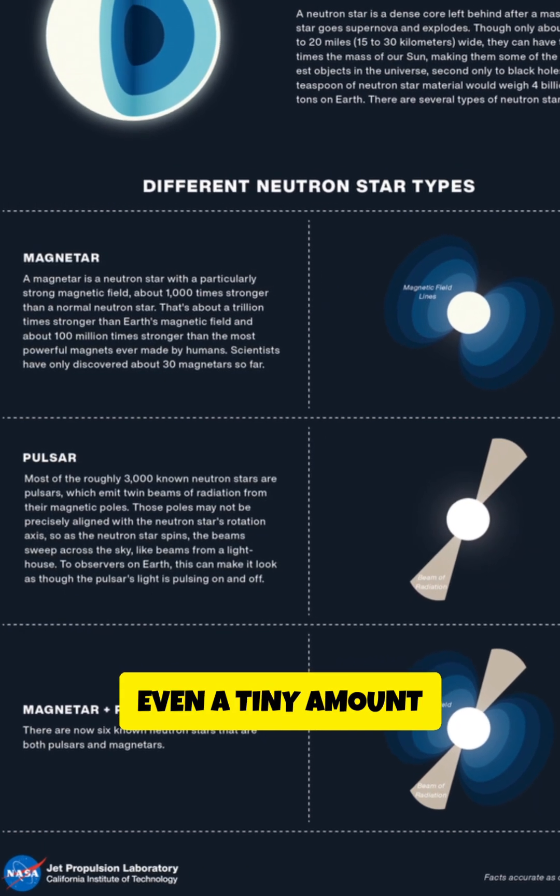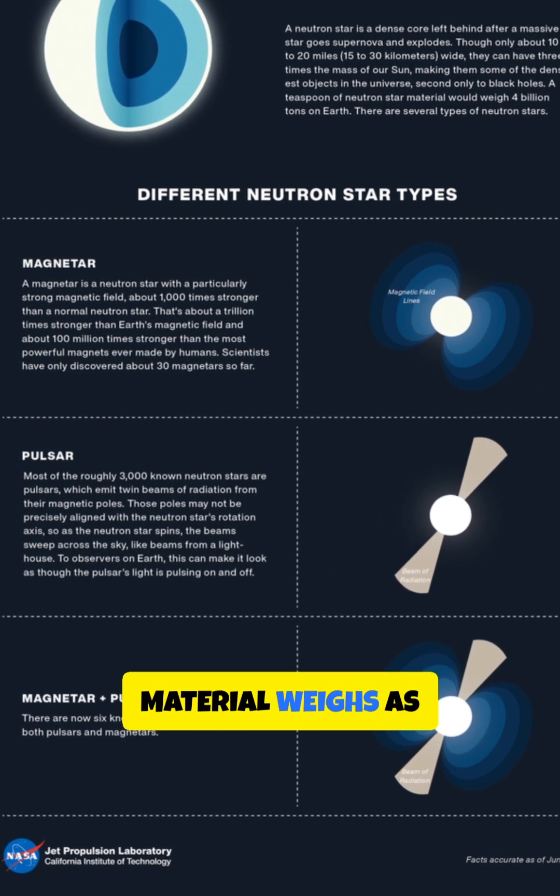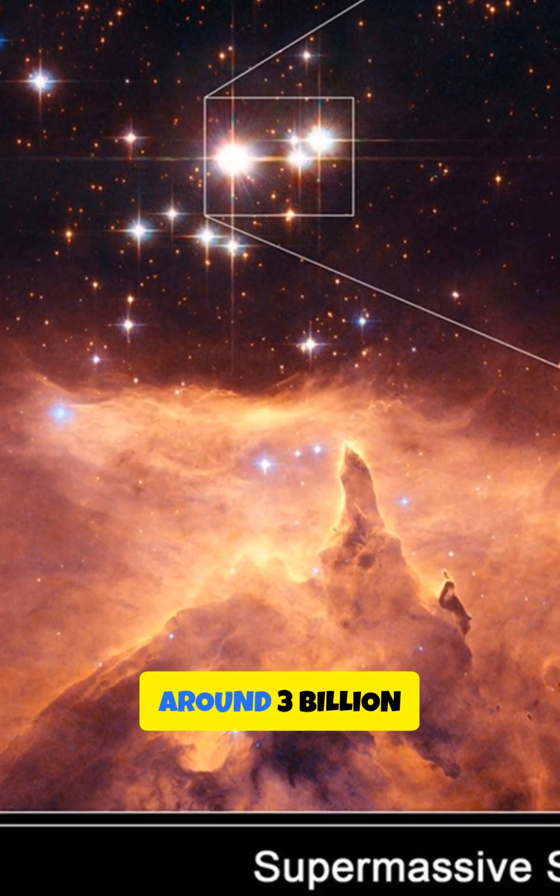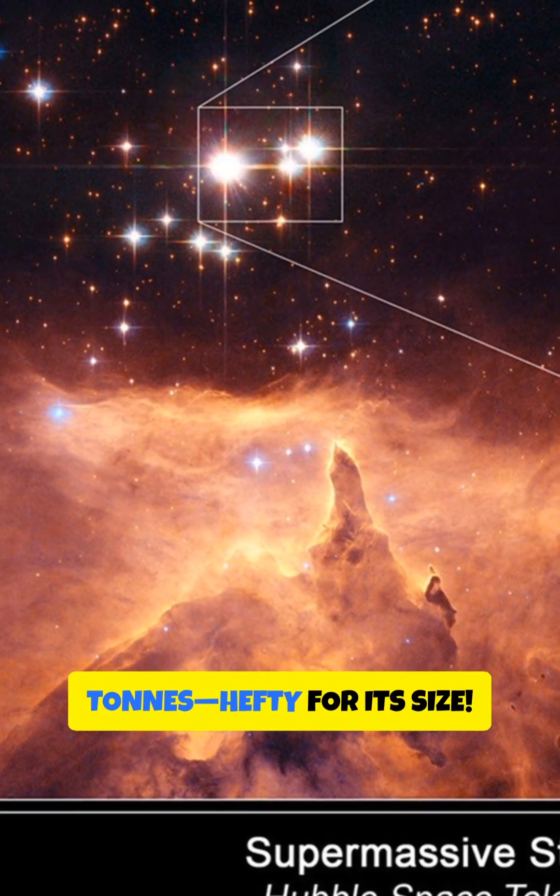This extreme density means that even a tiny amount of neutron star material weighs as much as a mountain. A matchbox filled with neutron star material would weigh around 3 billion tons - hefty for its size.